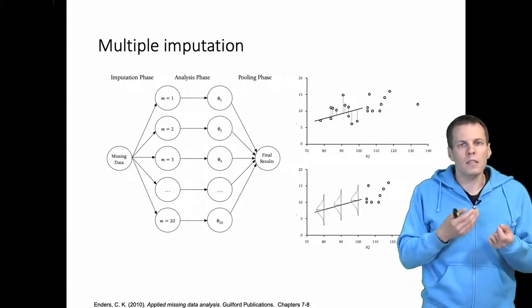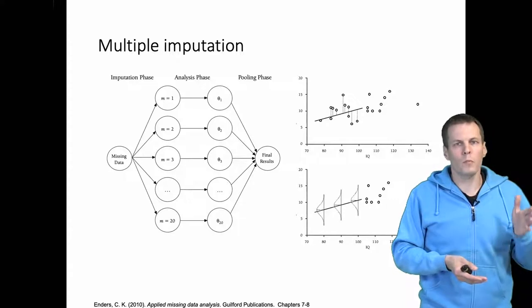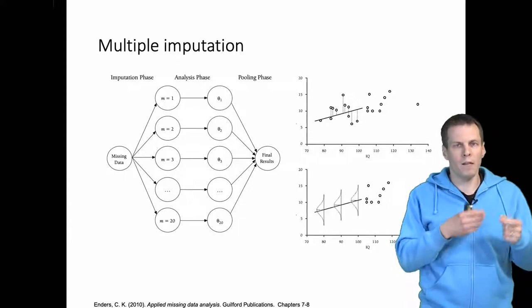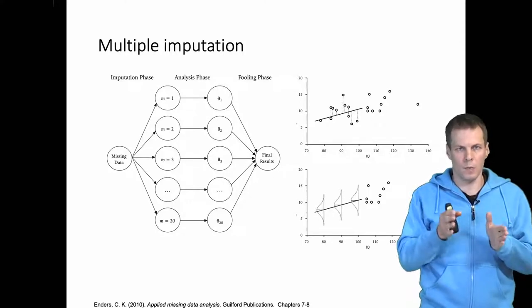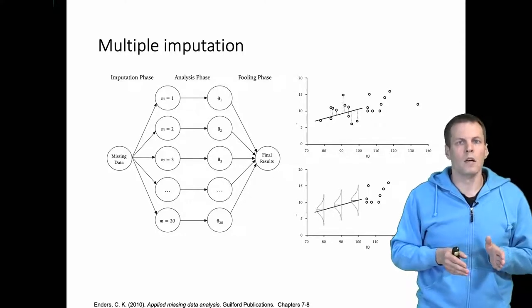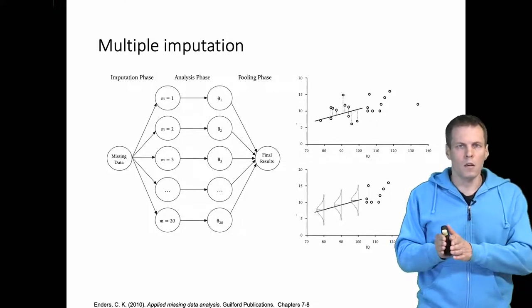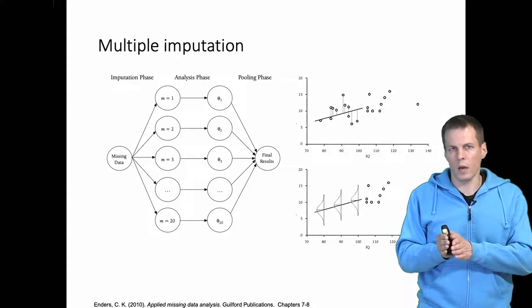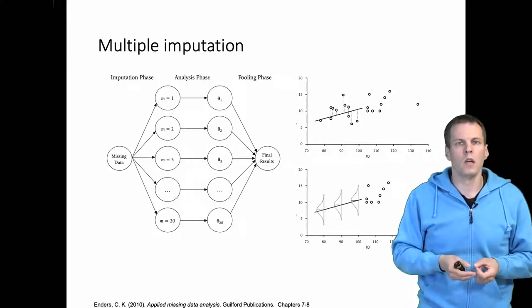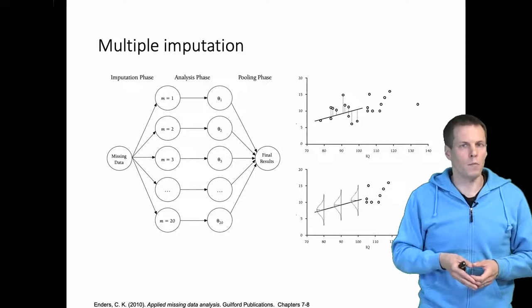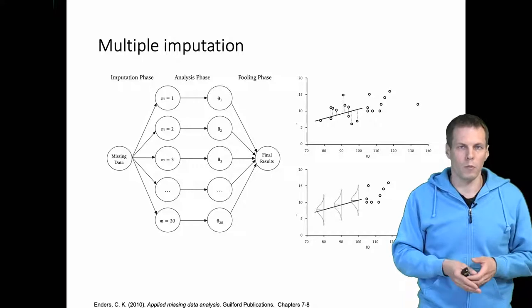So this is the first stage, the imputation stage. We impute multiple different data sets, every data set is different from one another. Then we analyze every data set separately using the analysis technique, and the analysis stage does not differ in any way from the analysis of full data. So we would apply regression analysis like we do normally and we would just apply the regression to hundred different data sets or how many we impute.